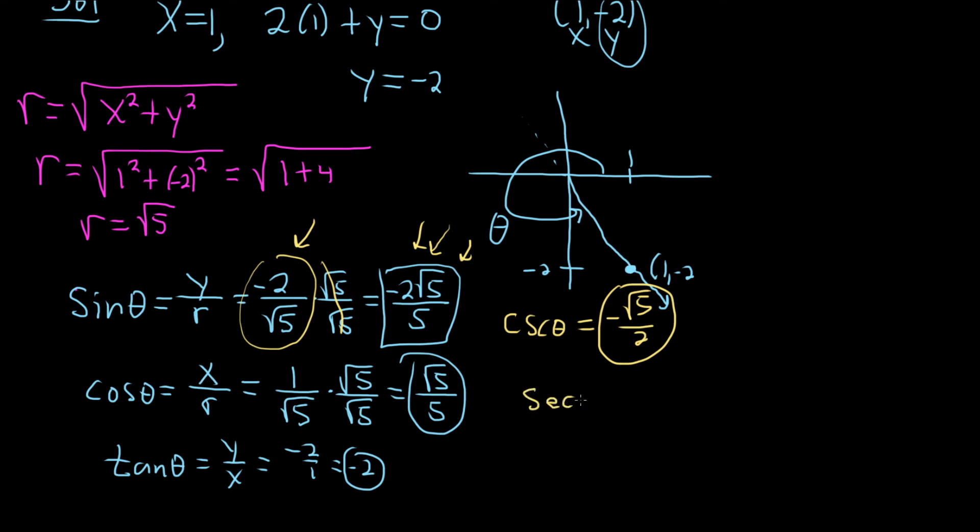The secant of theta—again, we need to flip this one, but that one has a square root on top. So let's go ahead and flip this one. You just get the square root of 5 over 1, which is the square root of 5.